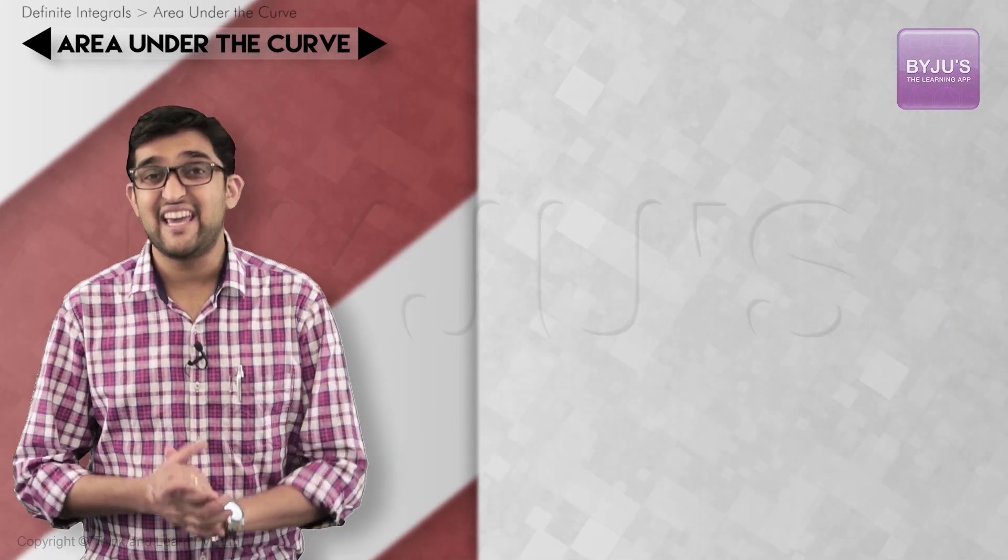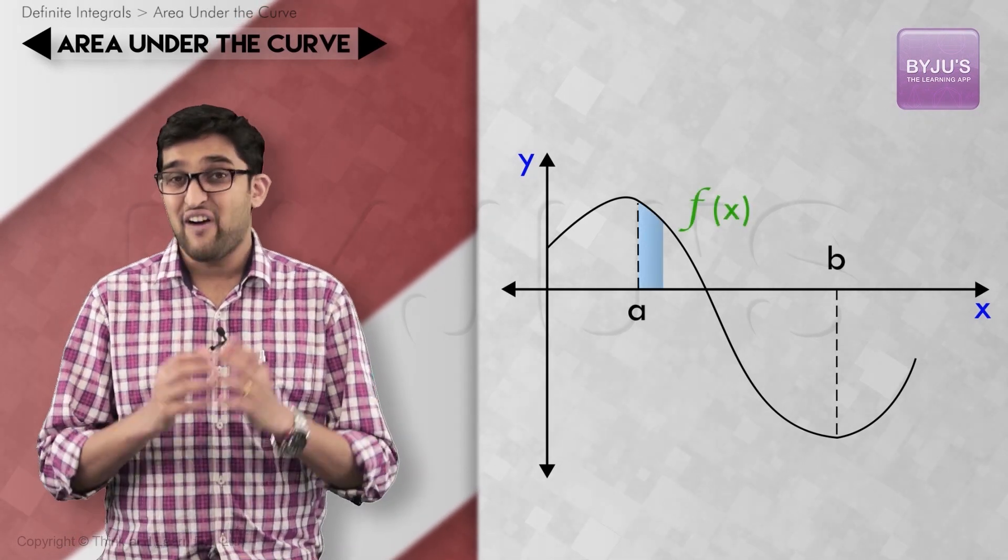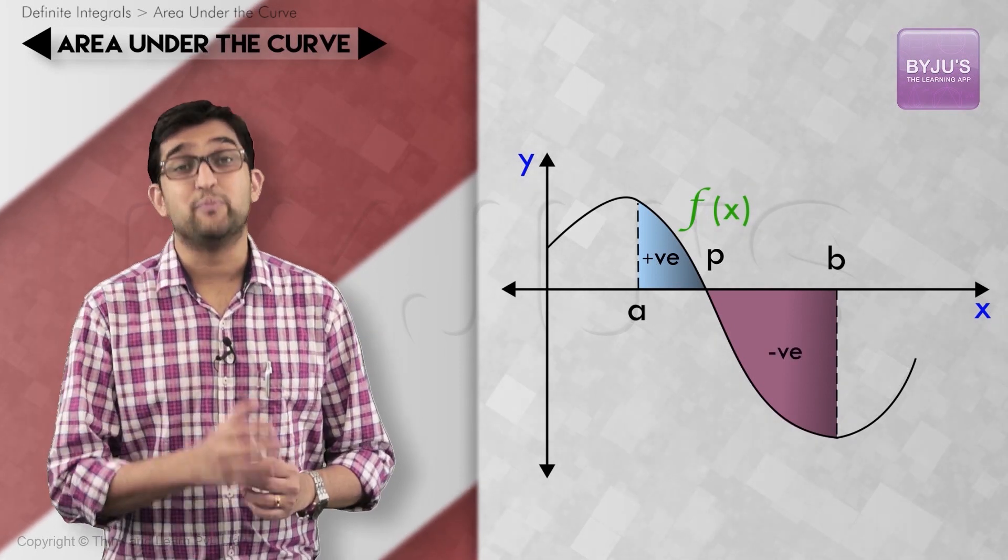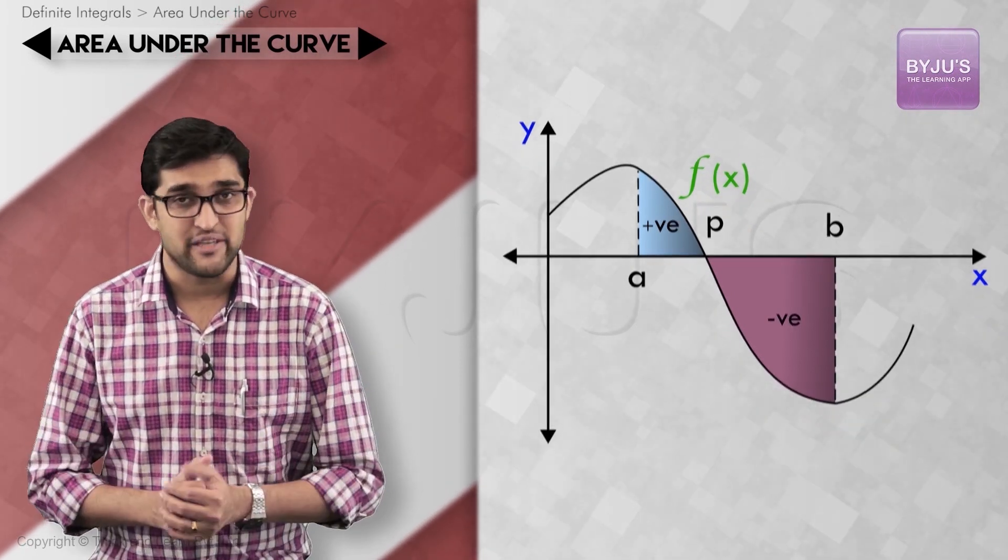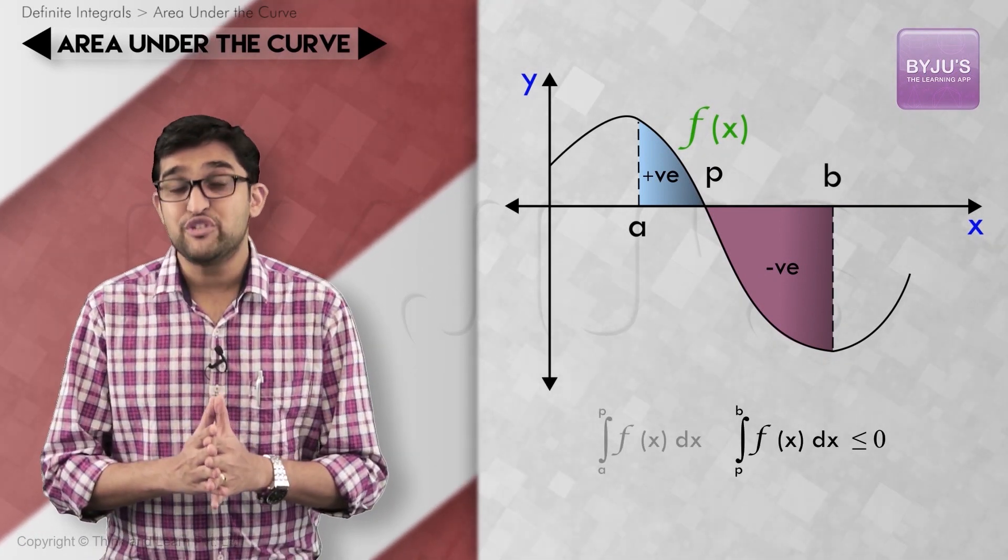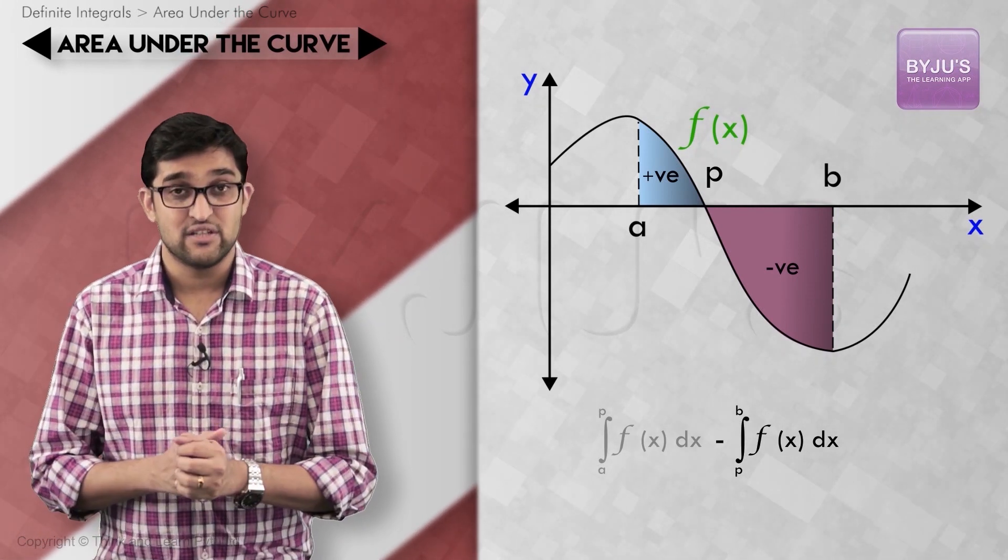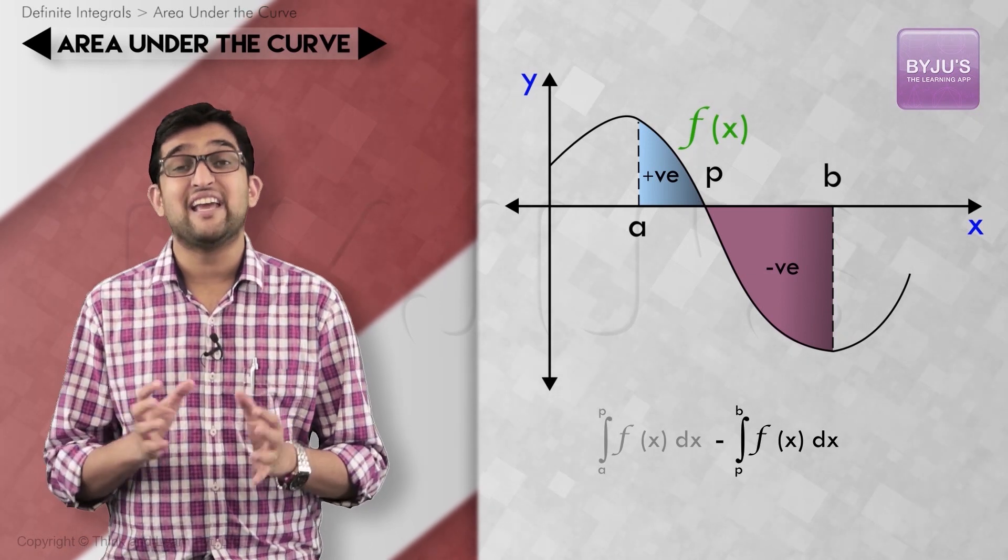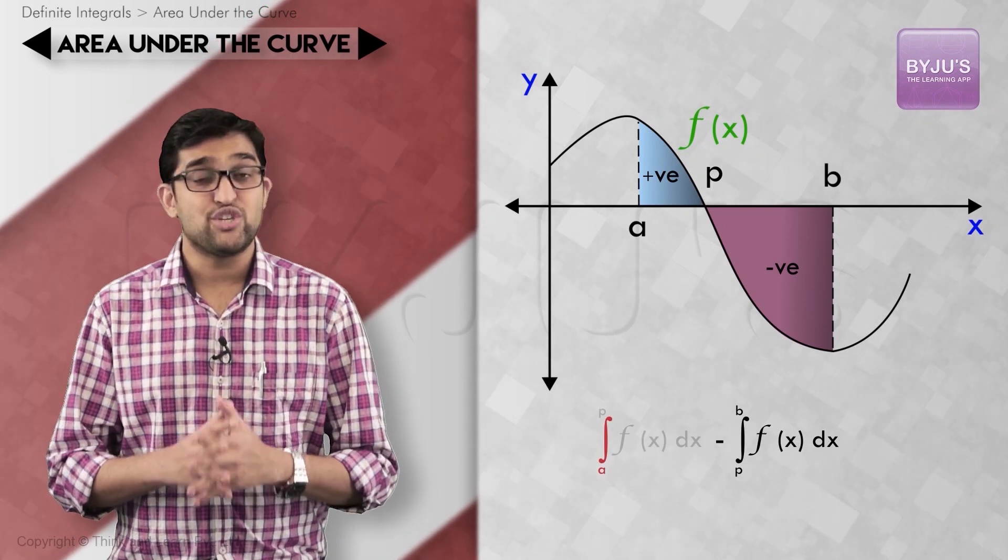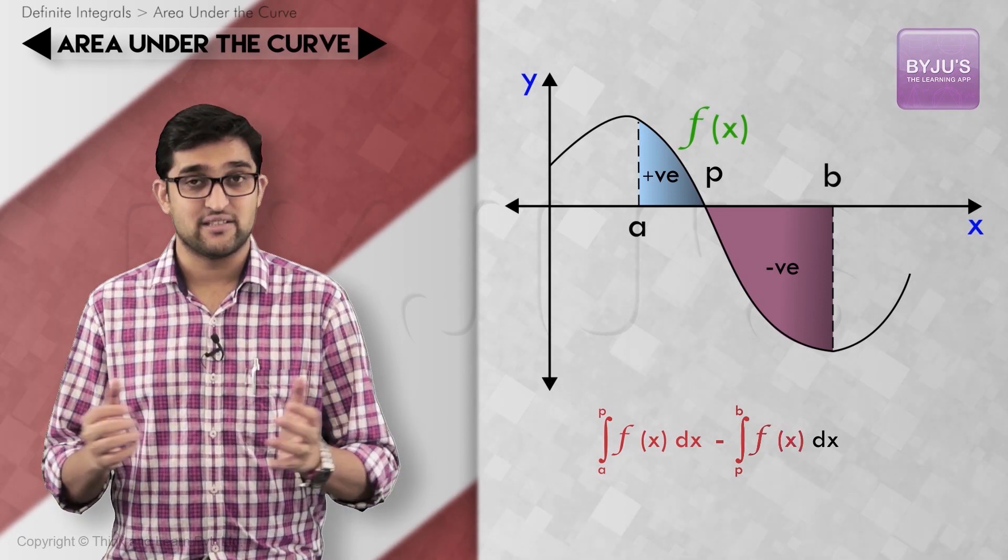But imagine a case where we need to find the area between a and b and the function is positive from a to p and negative from p to b, where p of course lies between a and b. Here as the integral from p to b turns out to be negative, we should put a negative sign to get the absolute value of our area calculation. So for this particular case, we can arrive at the formula as area equals integral a to p f(x) dx minus integral p to b f(x) dx.